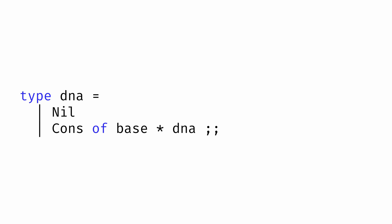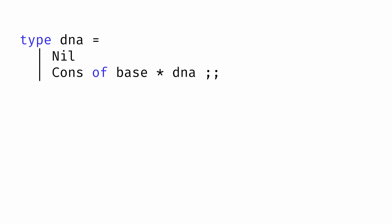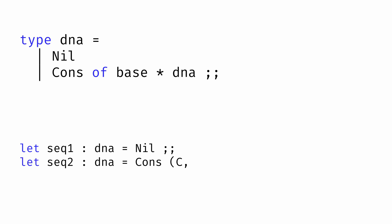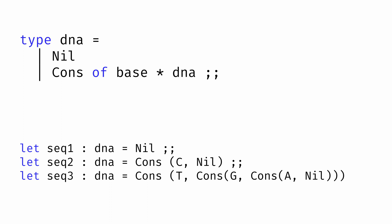This is now our type for a DNA sequence. A DNA sequence has two possible value constructors: Nil, which represents an empty DNA sequence, and Cons, which takes an argument of type base and another argument of type DNA to combine a base with another DNA sequence. We can then construct DNA sequences of this type — an empty sequence is just nil; a single-base sequence is cons of a base and nil; and a multi-base sequence is cons of a base and a remaining sequence, which itself is cons of a base and a remaining sequence, and so forth.